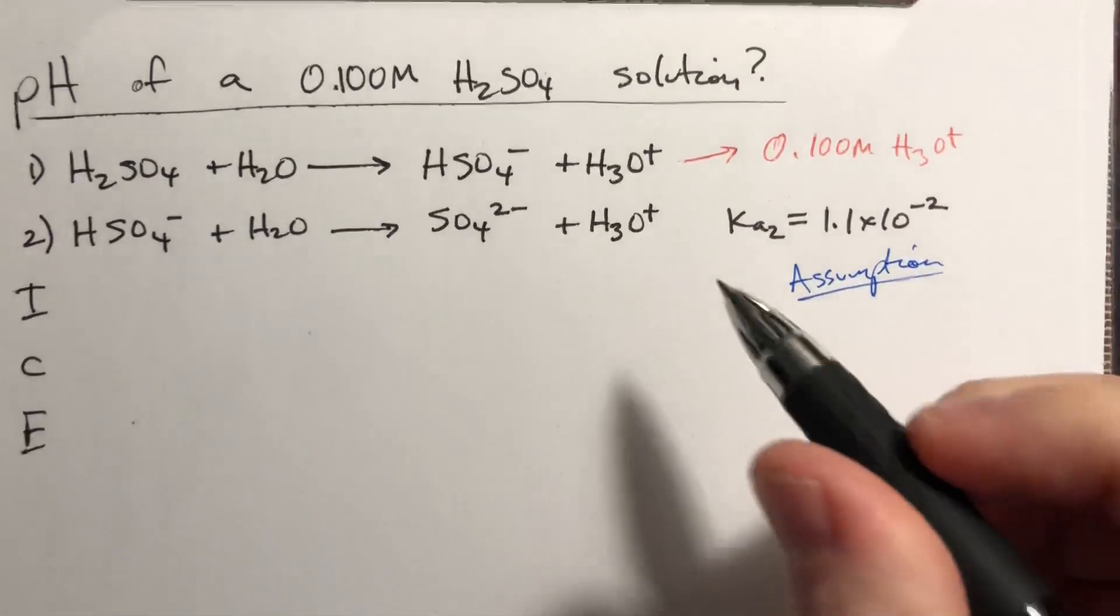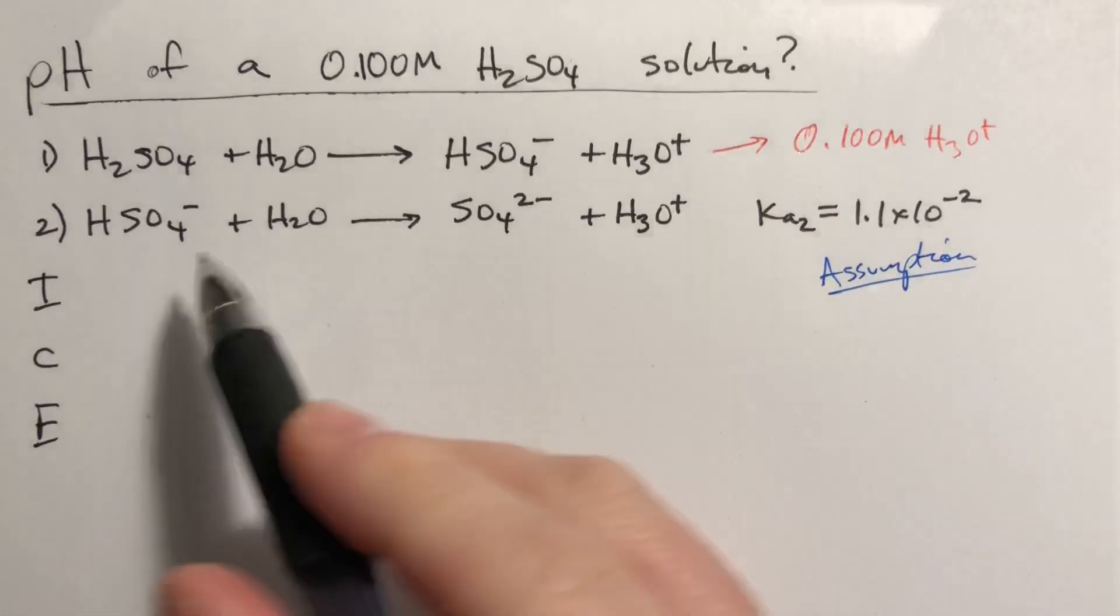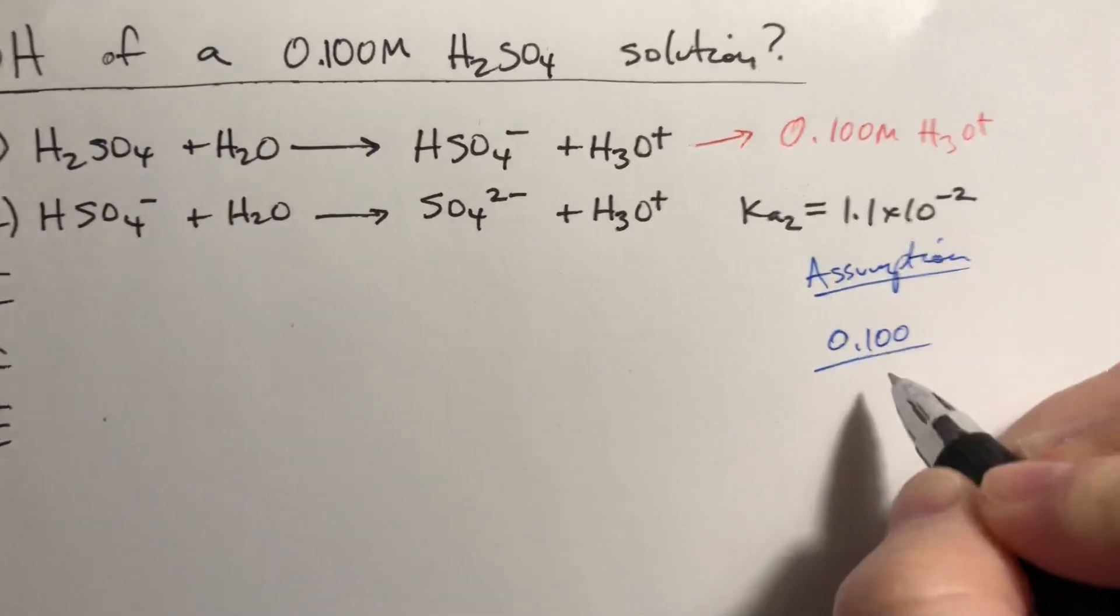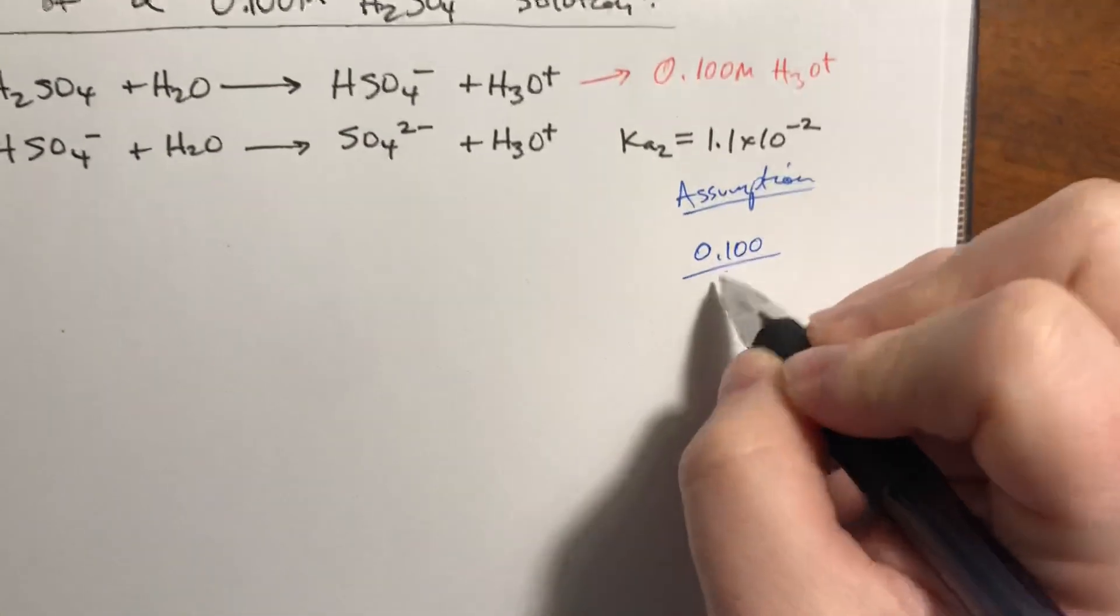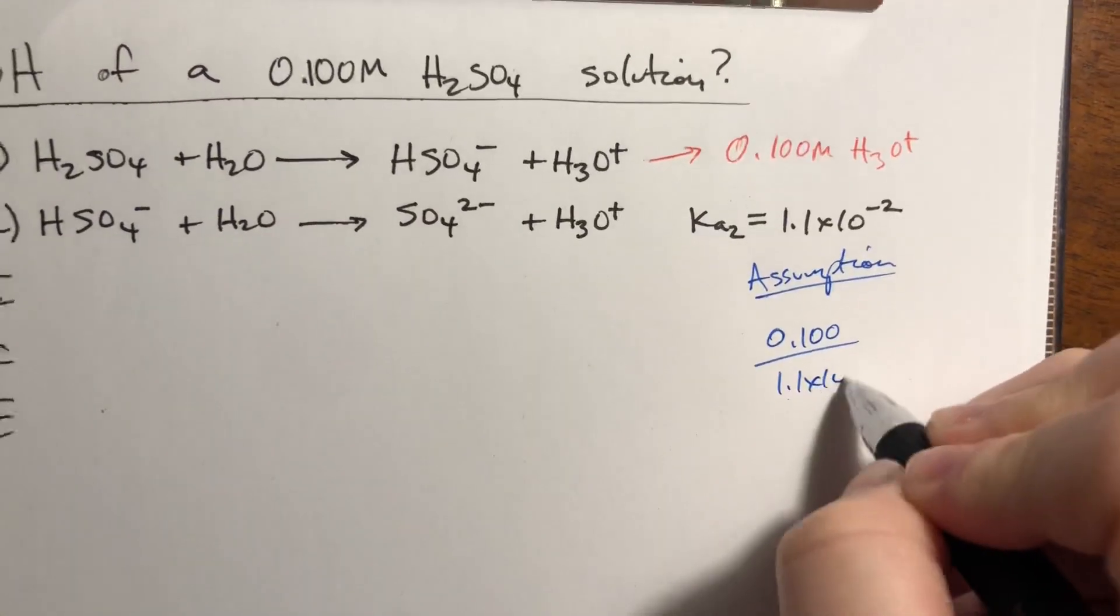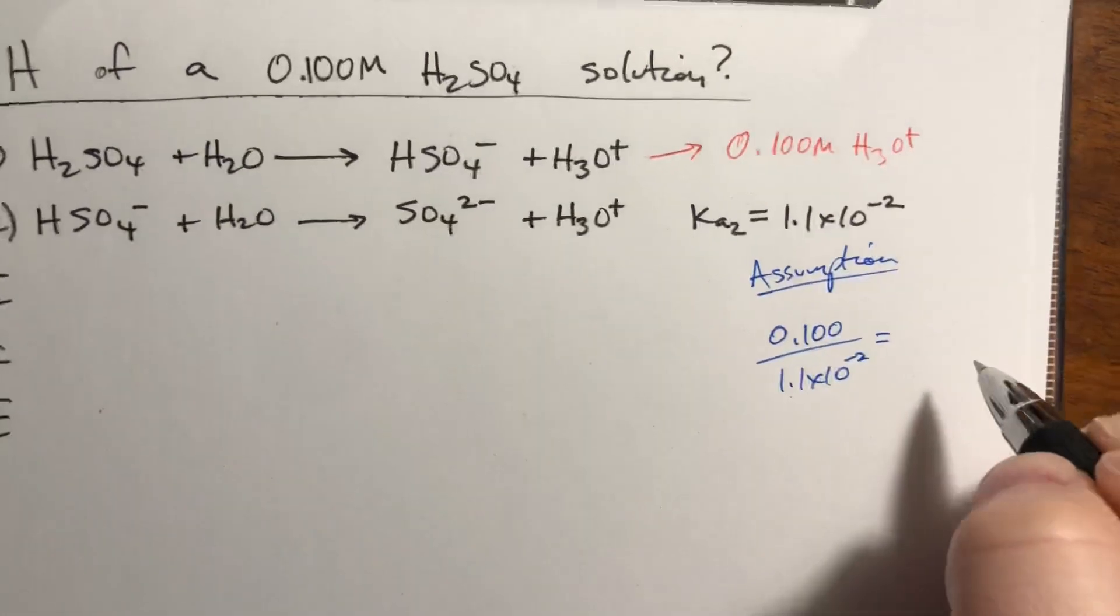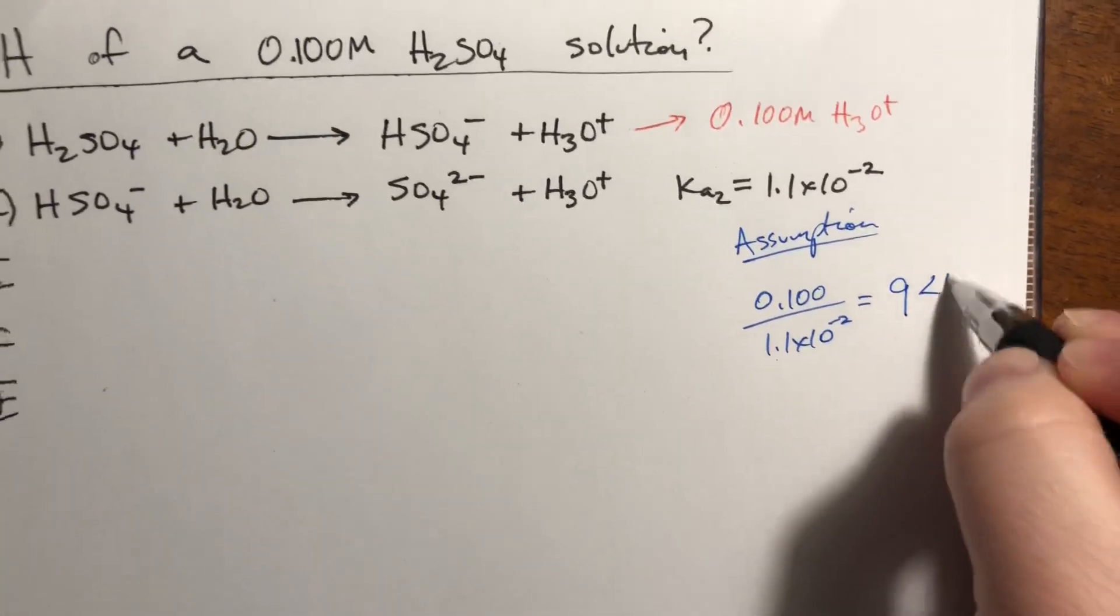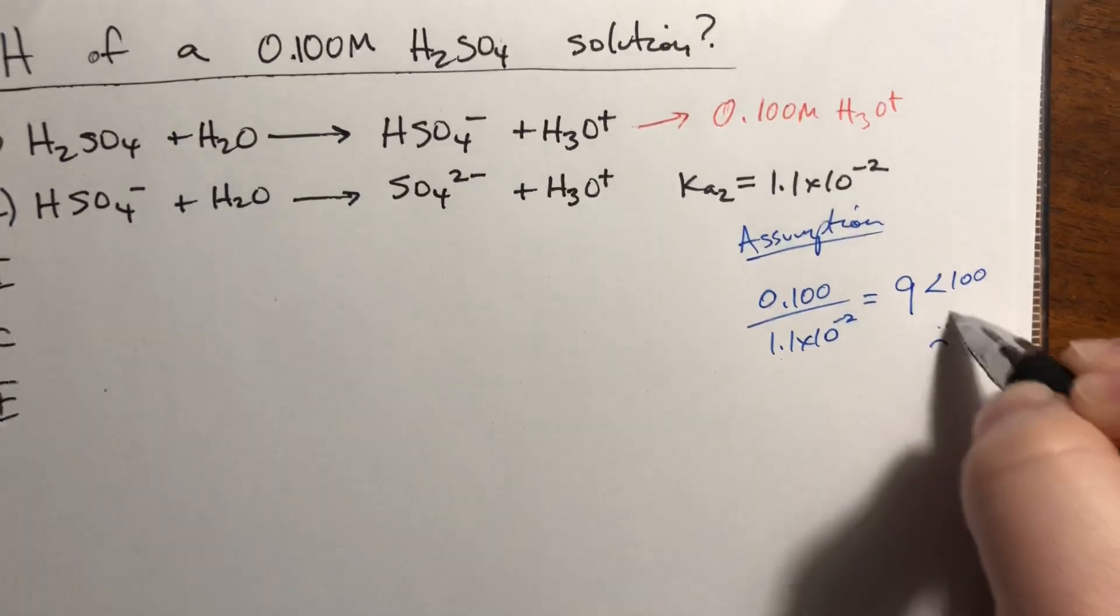So what we do is we take the concentration of HSO4-, which is also 0.1, divided by the Ka value for that second reaction, 1.1 times 10 to the negative second, and it comes out to 9, which is less than 100. So we have to use the quadratic.